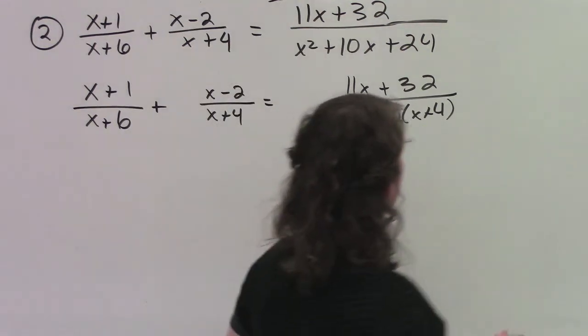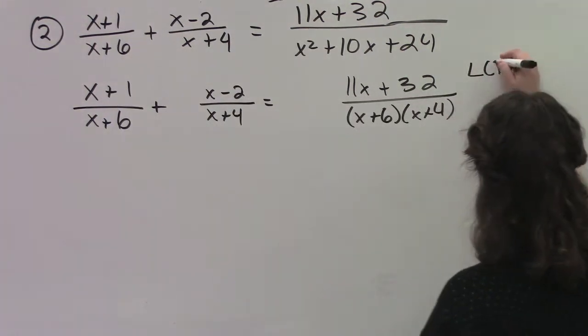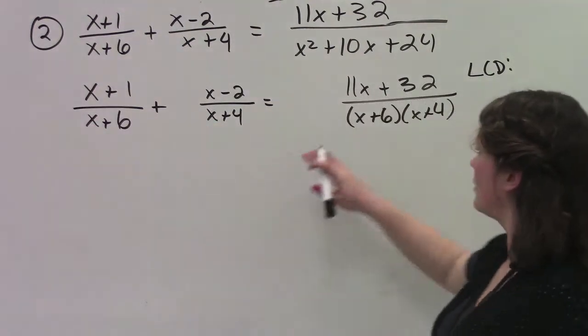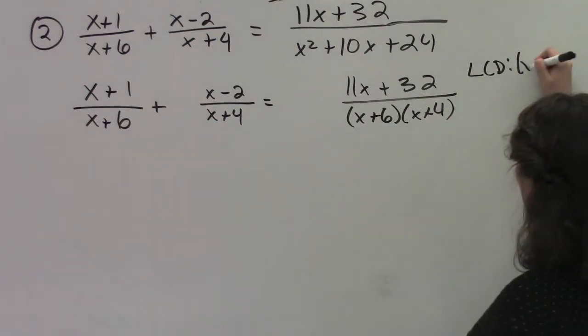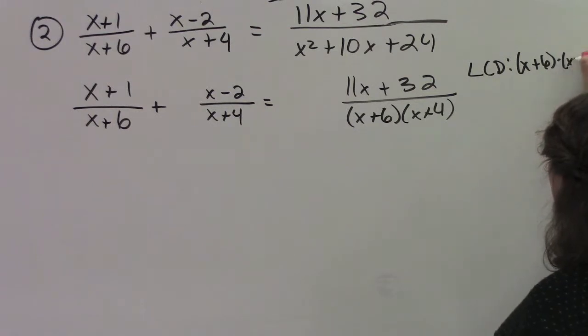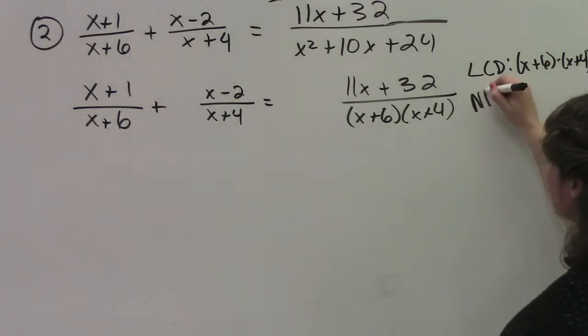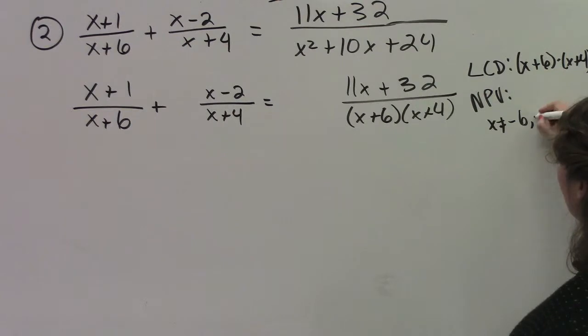At this point, we can write our lowest common denominator, which is going to be x plus 6 times x plus 4. And what I can do is I can state my non-permissible values. x cannot equal negative 6 or negative 4.